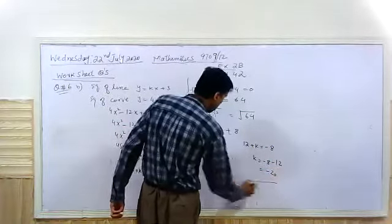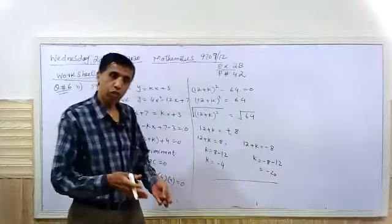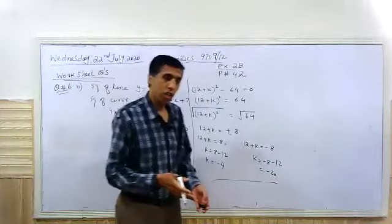These are the two roots. The value of k is minus 4 and minus 20.